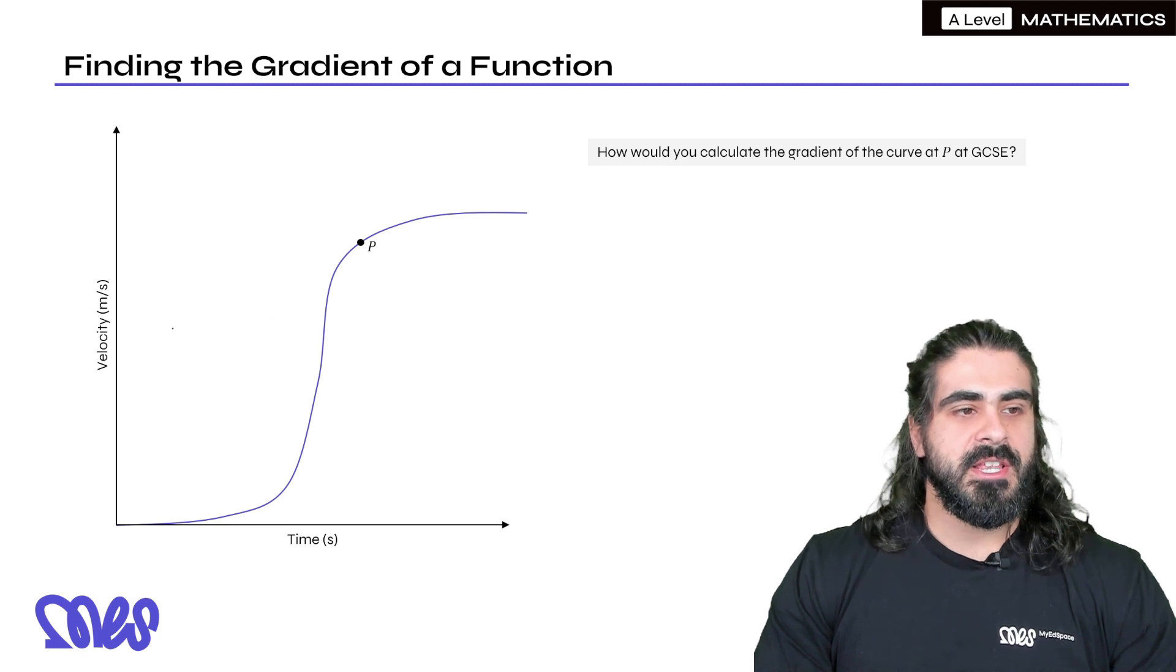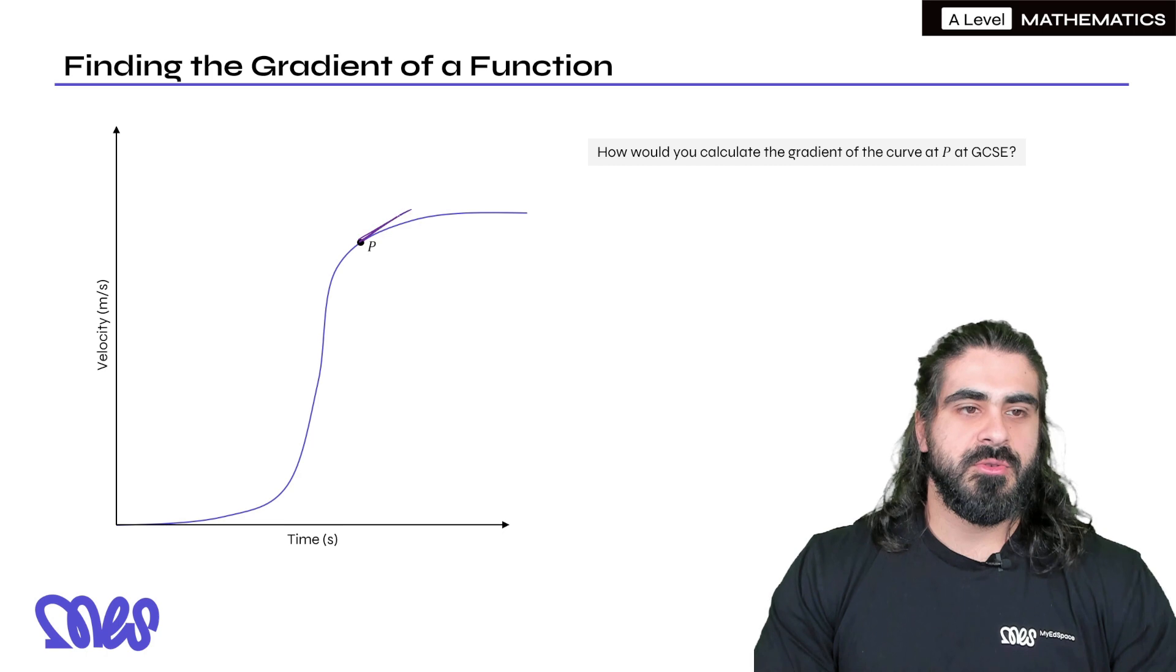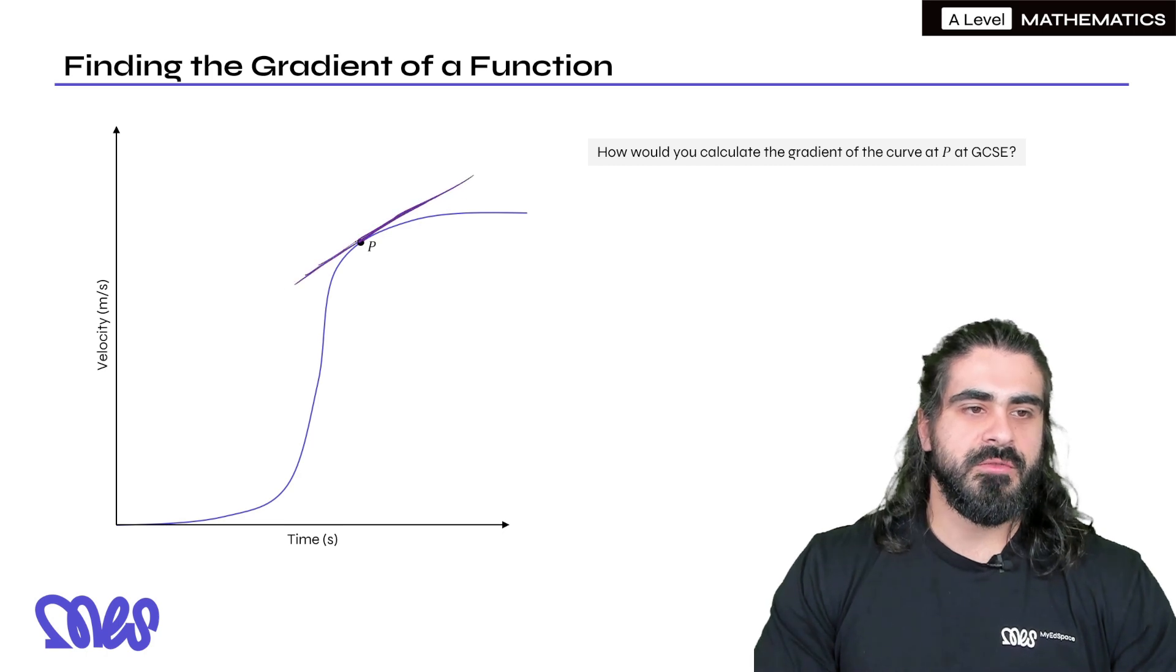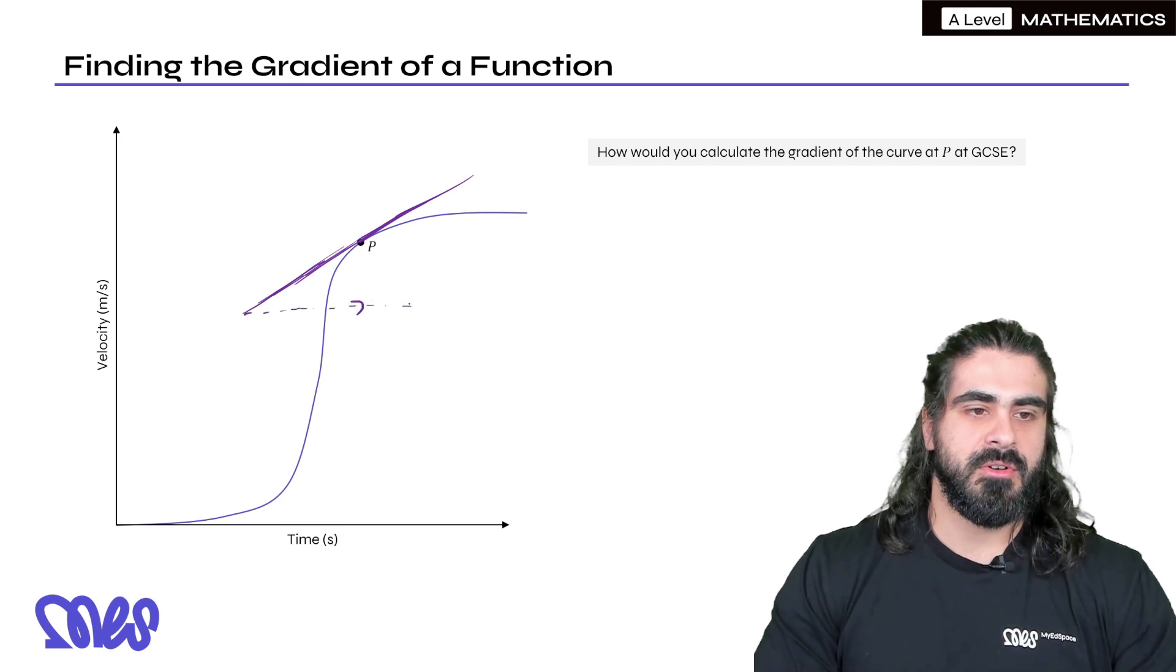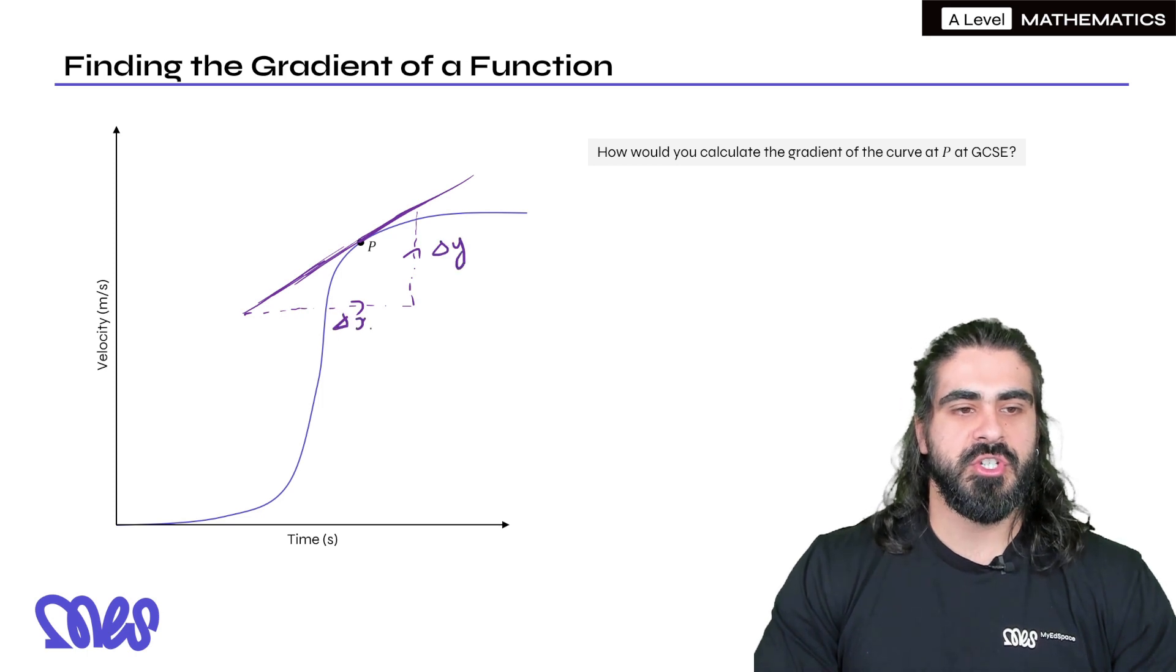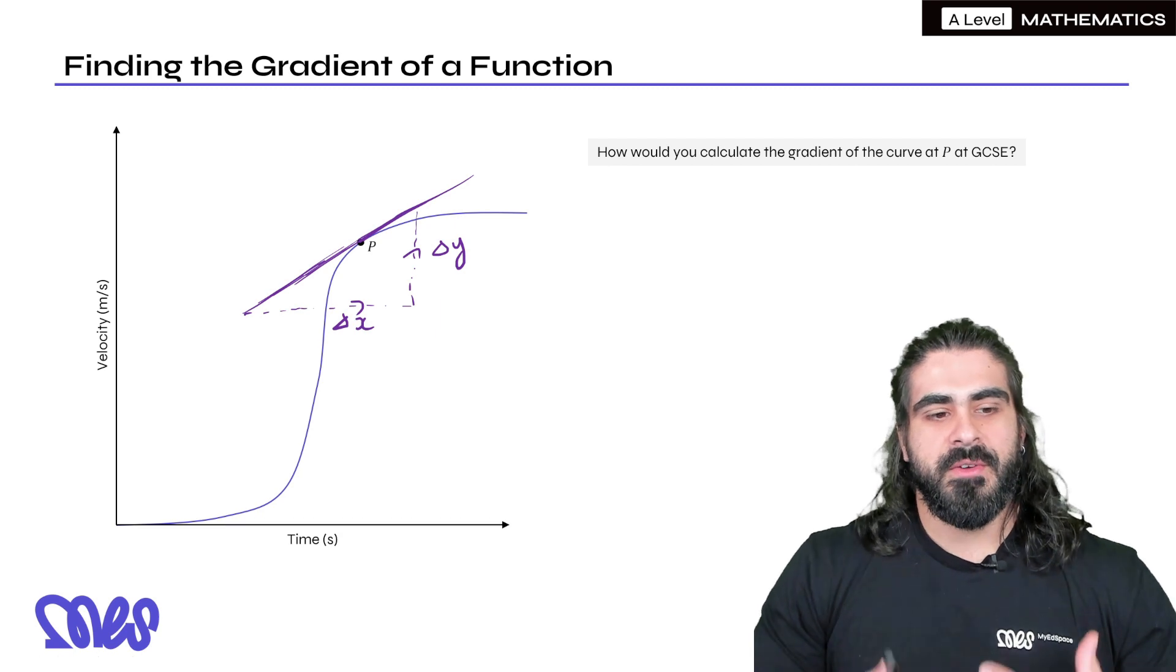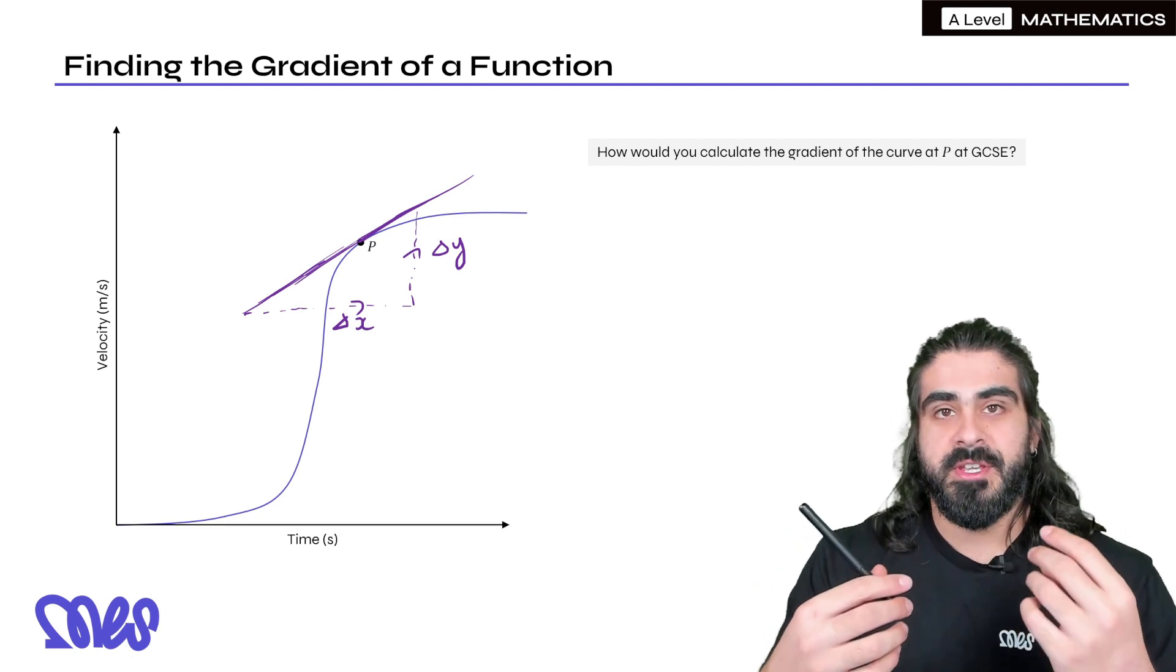Now to find the gradient at GCSE, they would have given you graph paper, and what you would have had to do is a kind of estimation. You would have drawn a tangent and estimated by working out the gradient of that tangent. You would have picked two points and done the change in y over the change in x. And at GCSE, when you found the gradient of a velocity time graph, that showed you the acceleration.